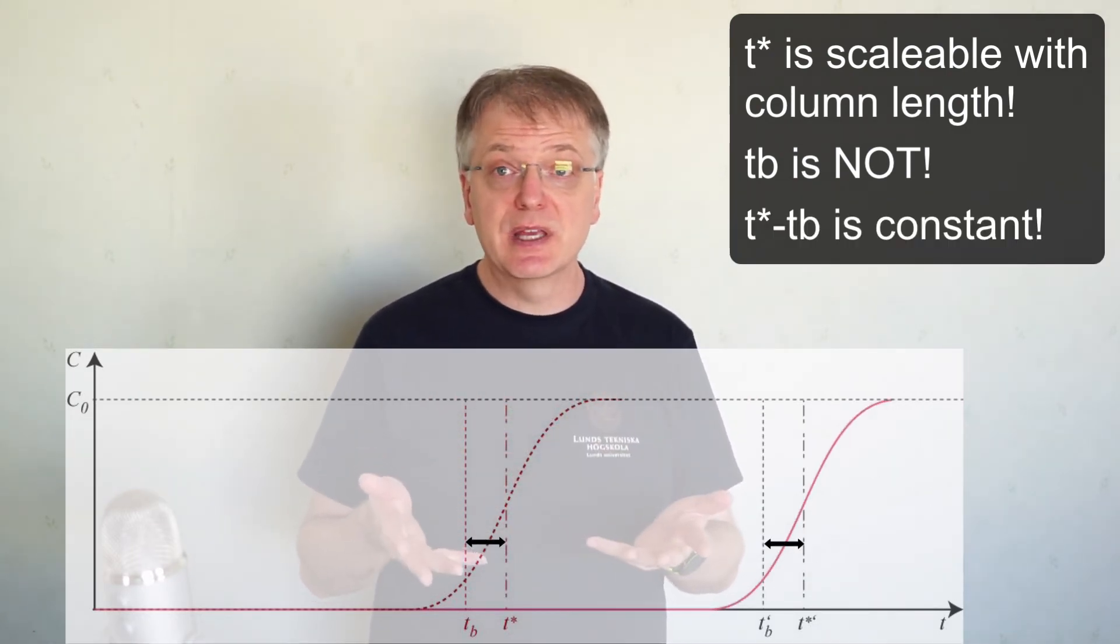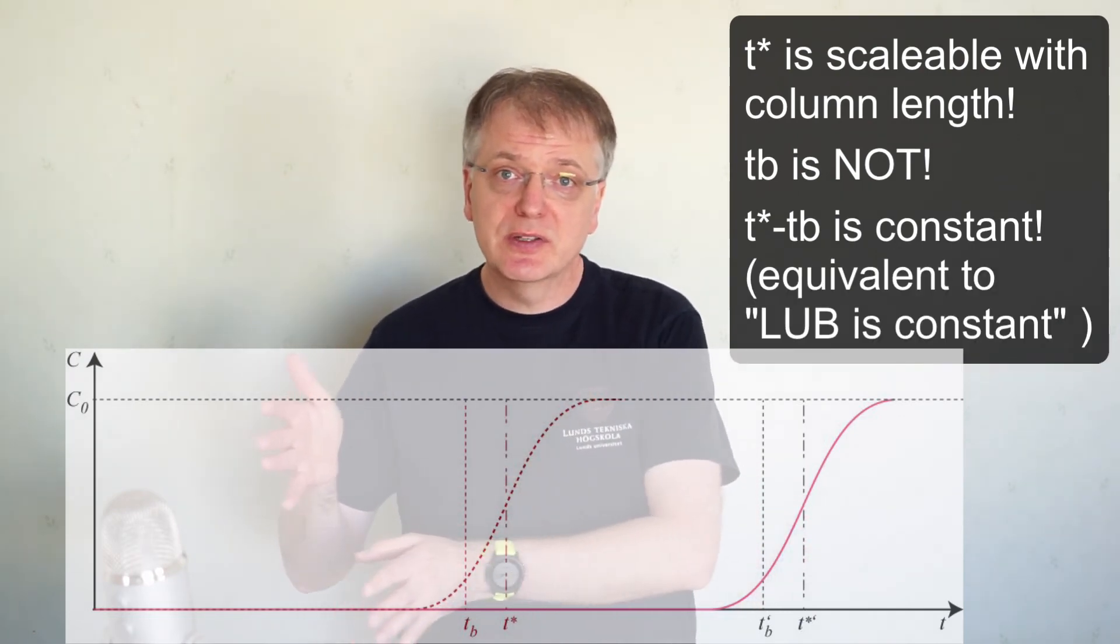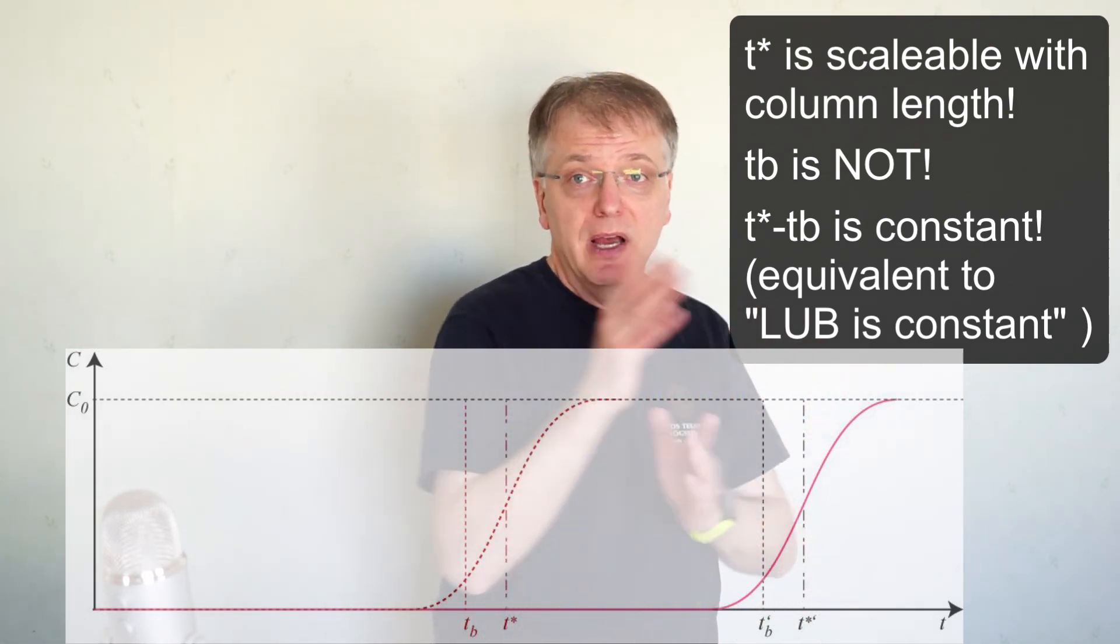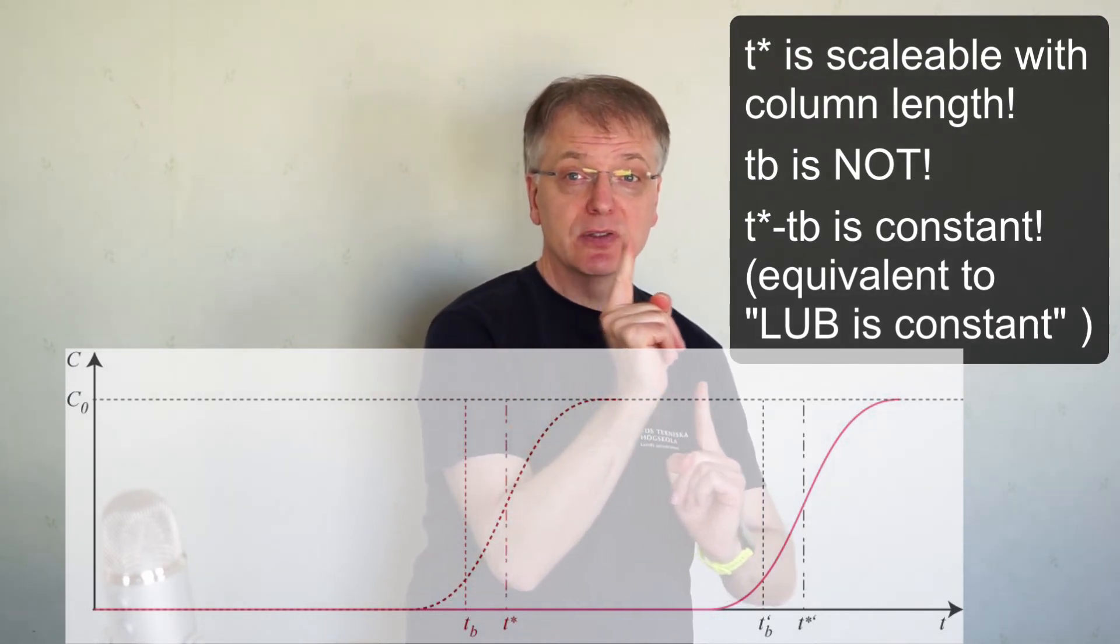This is equivalent with saying that LUB is constant, because when we have constant pattern, the concentration gradient does not change as it moves through the column, and the distance in time or space between two parts of the gradient remains constant.